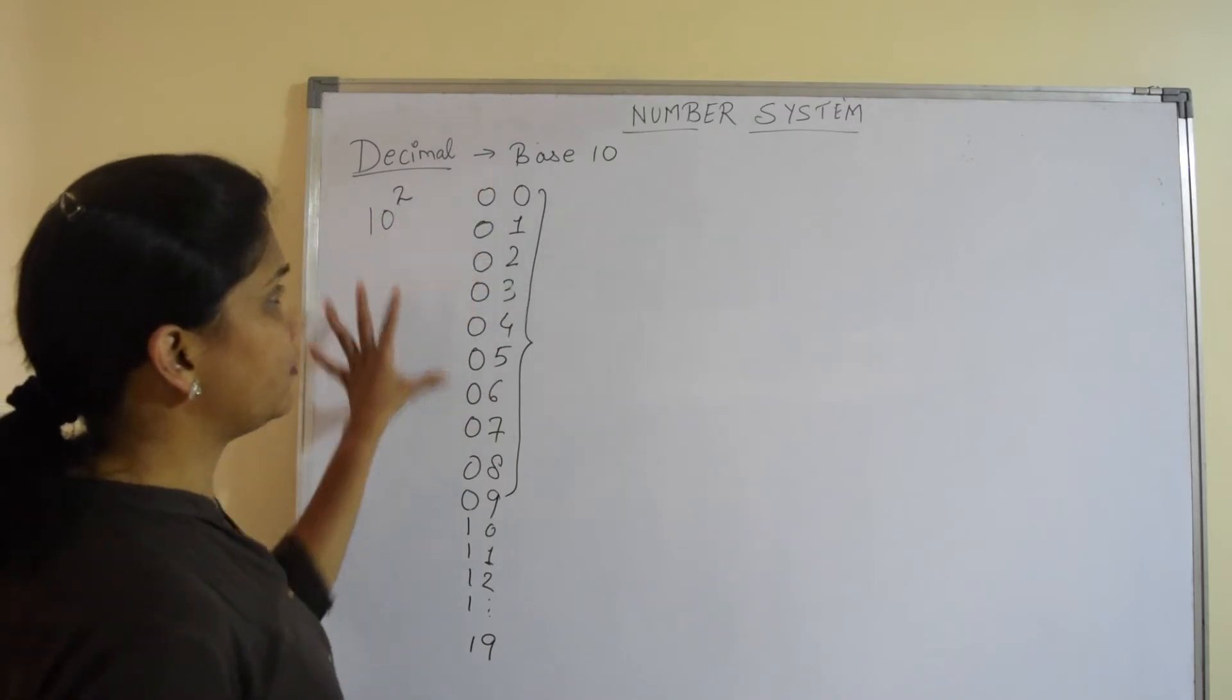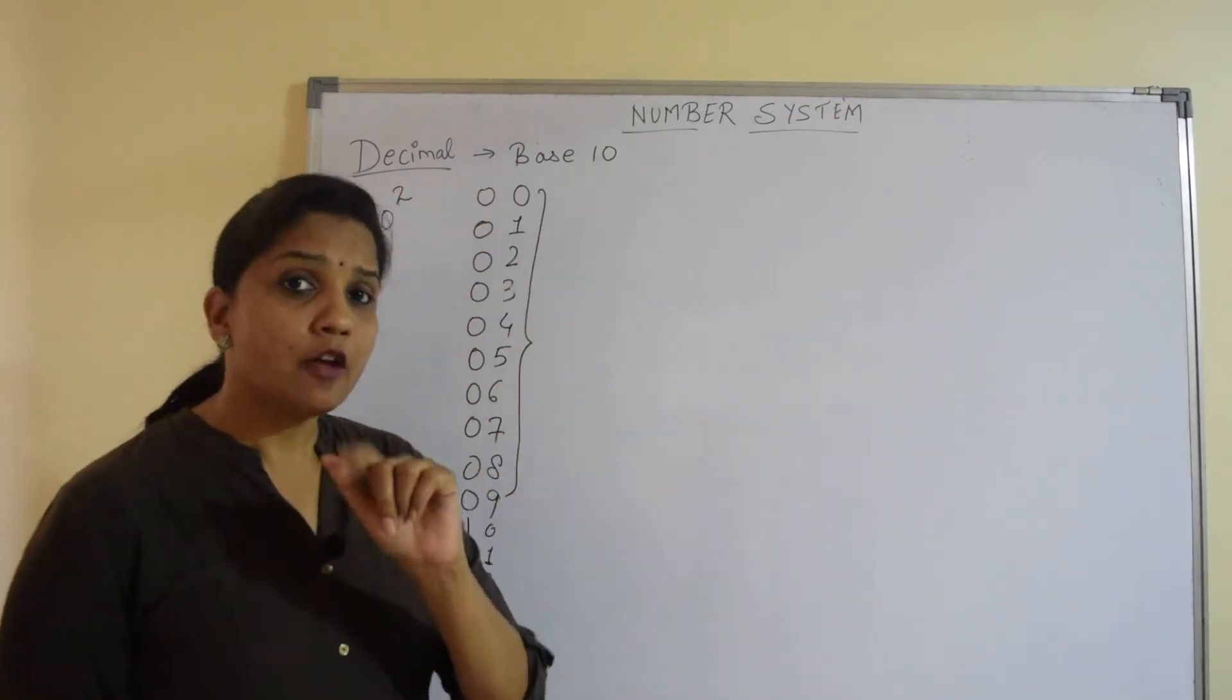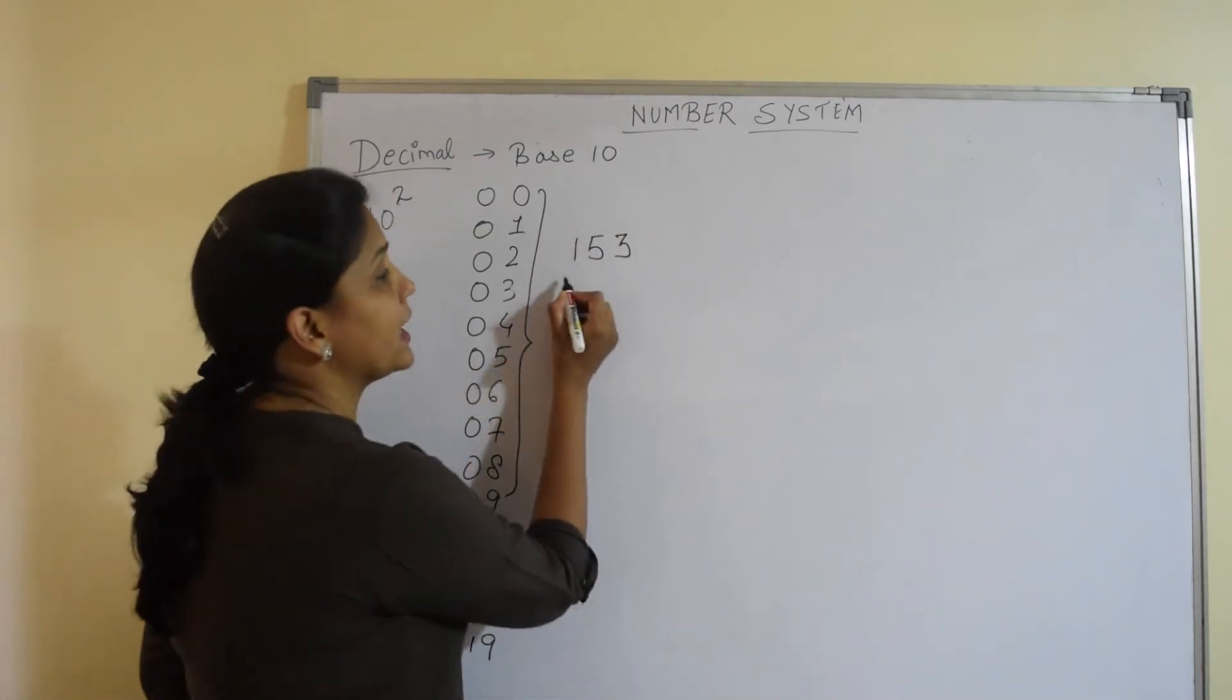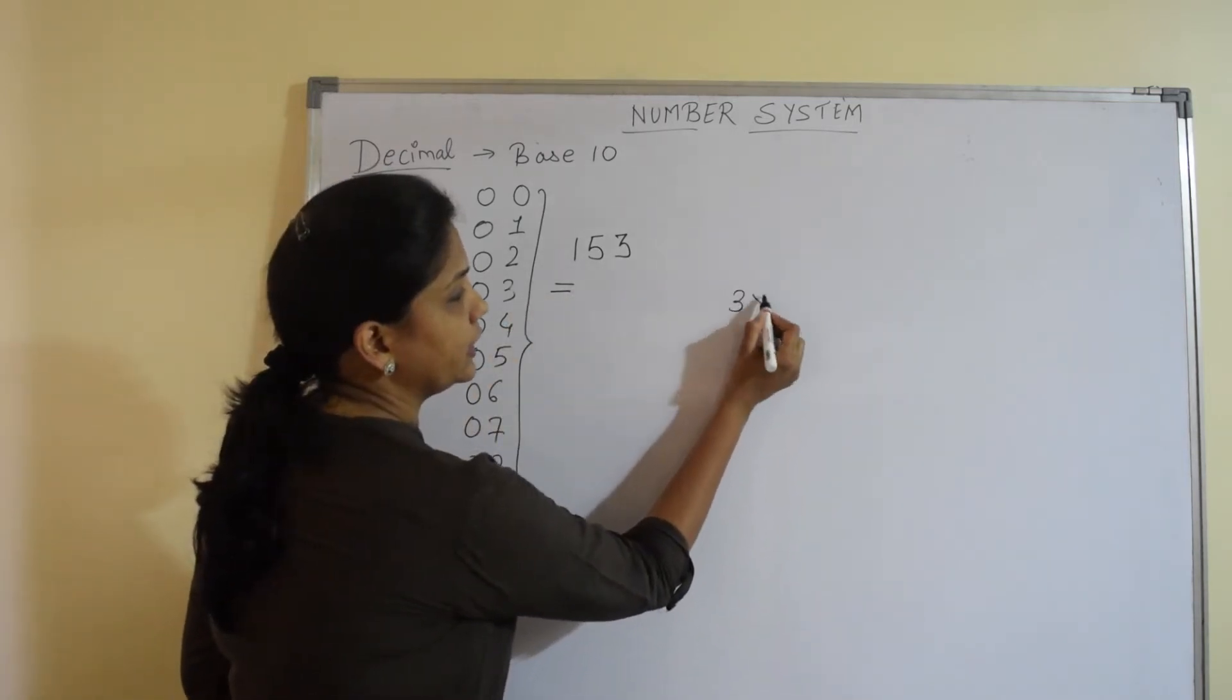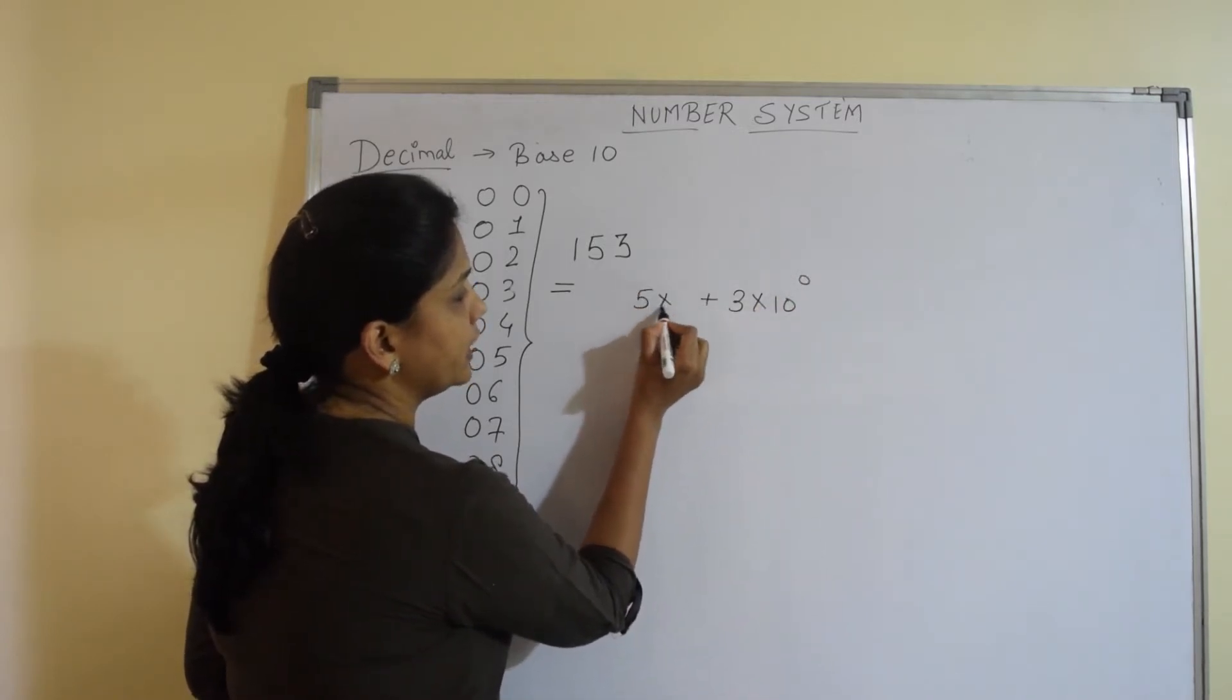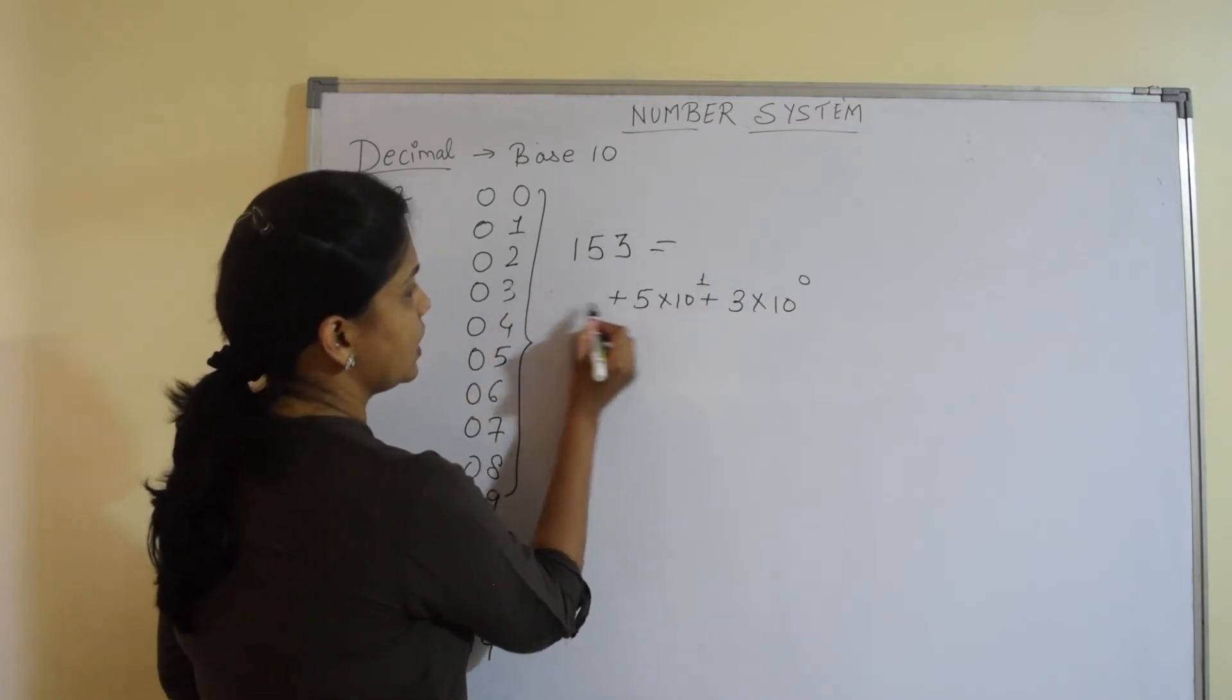So we all are familiar with this decimal number system with the base 10. We also know that if we have any decimal number, it can be represented in the powers of 10. I can say 153 as 3 into 10 to the power 0 plus 5 into 10 to the power 1 plus 1 into 10 to the power 2.